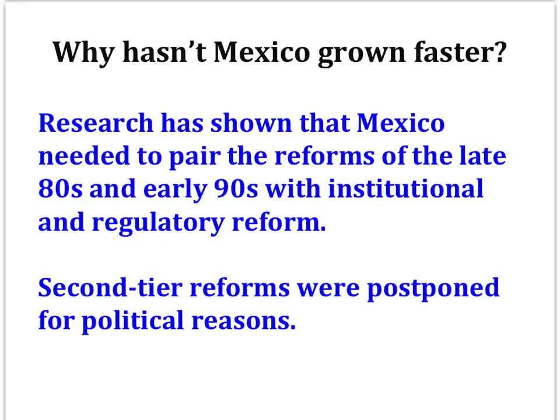Research has identified a number of factors that might explain why incomes in Mexico aren't converging to U.S. incomes. First, some have argued that the economic reforms of President Salinas in the late 80s and early 90s actually set the country back in the sense that they weren't paired with strong institutional and regulatory reform. Thus, some of the reforms, like privatization of the banking system, ended up creating new problems. Second, Mexico could have used follow-up second-tier reforms like overhauling labor laws, but these have been avoided because of their political sensibility. And third, policymakers have been unable to efficiently counteract external shocks via fiscal and monetary policies.